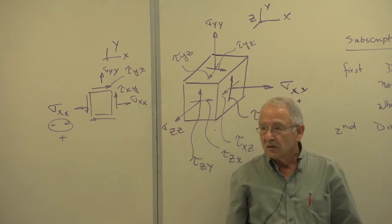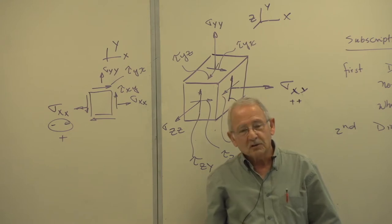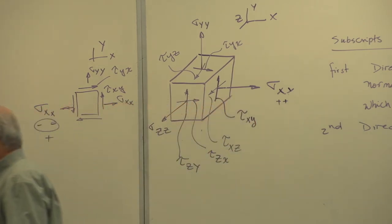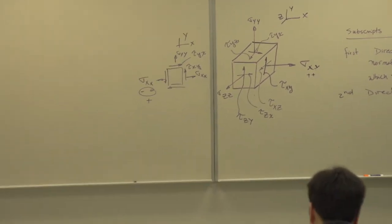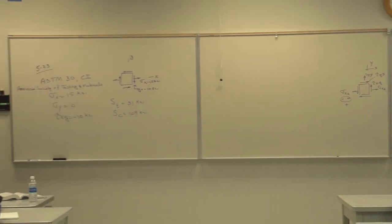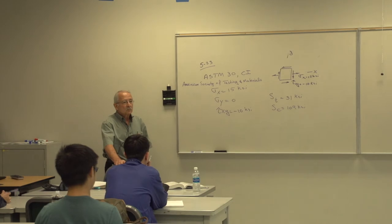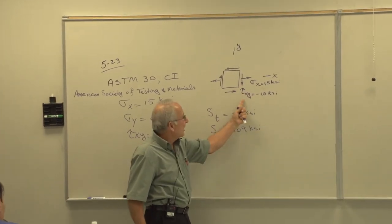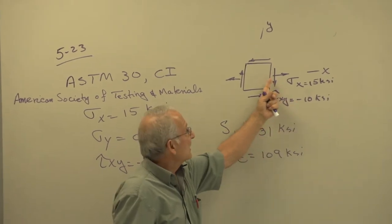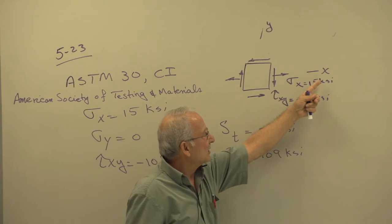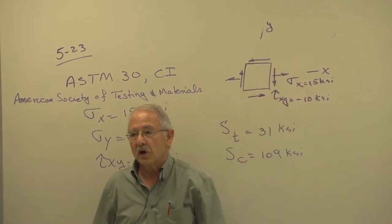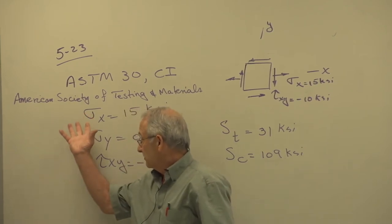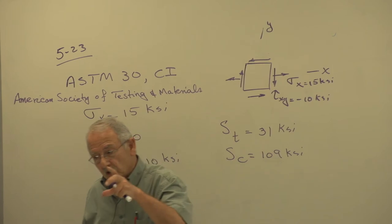So that's how I drew this stress. It says tau XY is minus 10 KSI — the stress that acts on this plane is negative. The outward normal is certainly not negative, therefore the shear stress must act in the negative direction of the Y axis, and that's why it's drawn the way it is. Given this setup, you should be able to draw the stress element from the numbers.